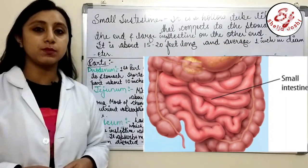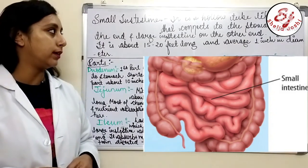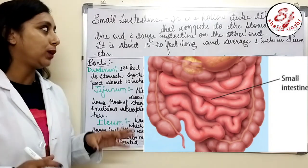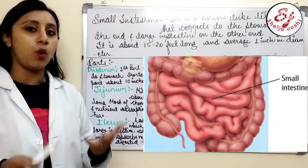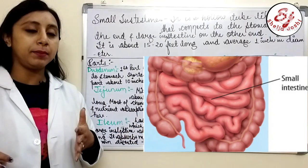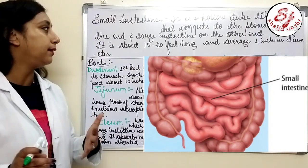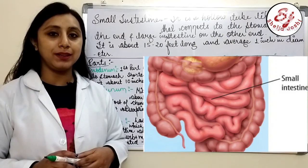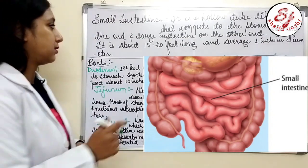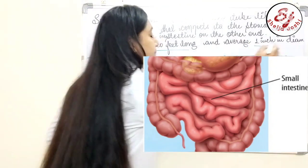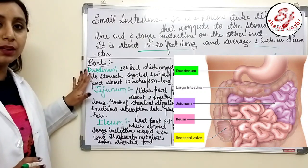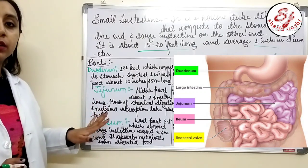After the stomach is the small intestine. It is a hollow tube-like organ connecting to the stomach on one end and the large intestine on the other end. It is about 15 to 20 meters long and the diameter is about 1 cm. There are 3 parts of the small intestine: the first is the duodenum, the second is the jejunum, and the third is the ileum.